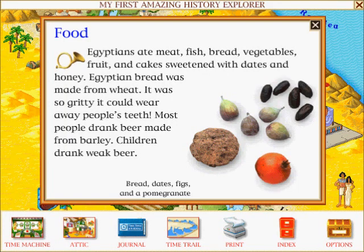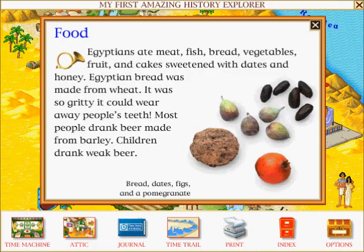Food: Egyptians ate meat, fish, bread, vegetables, fruit, and cakes sweetened with dates and honey. Egyptian bread was made from wheat. It was so gritty it could wear away people's teeth. Most people drank beer made from barley. Children drank wheat beer.